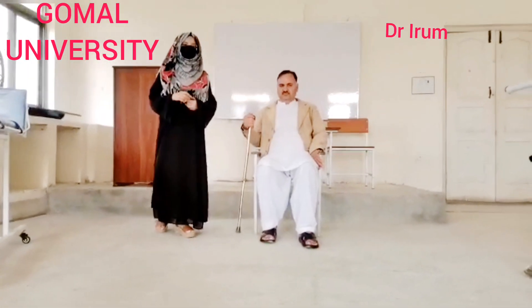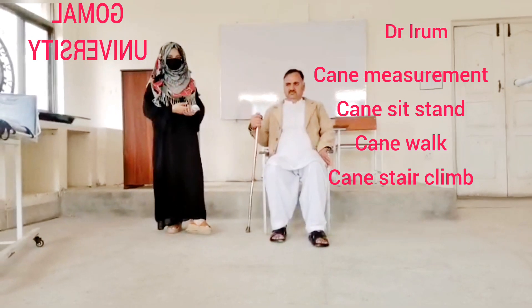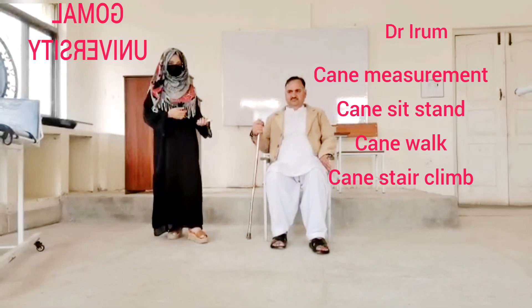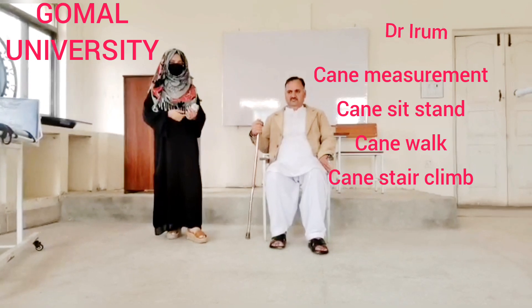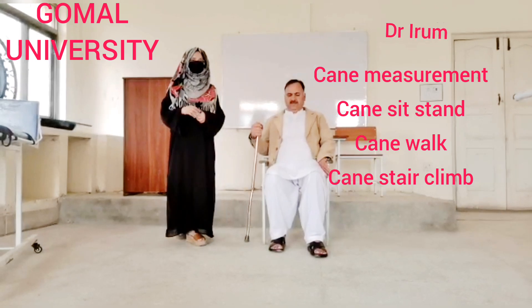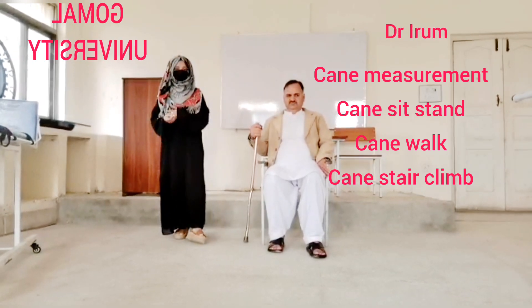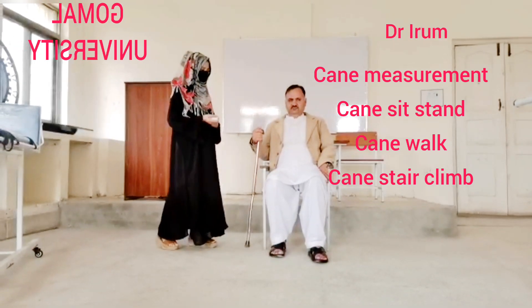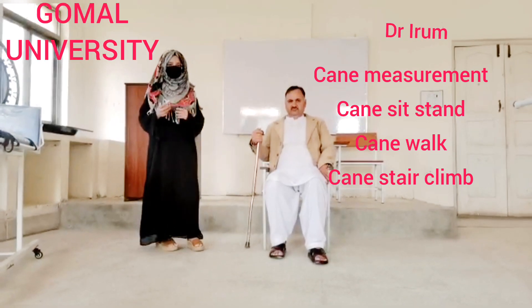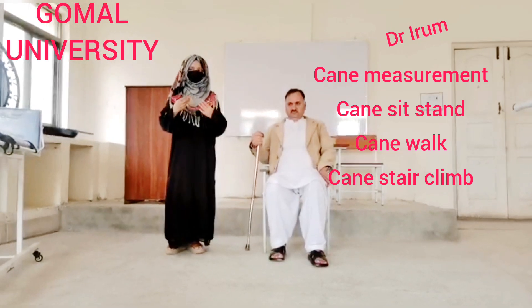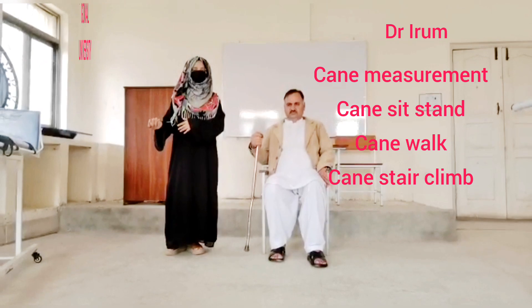Walkers are used for more balance issues. If the patient has good balance, then we give crutches, and if the patient has even better balance, then we give a cane only — as it provides less support for the patient. In this video, we discuss the cane measurement, and then how to use the cane for sitting, standing, walking, and stair climbing. This is our first video on walking aids, covering only the cane measurement.